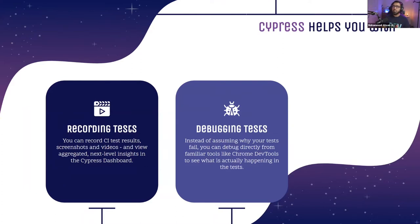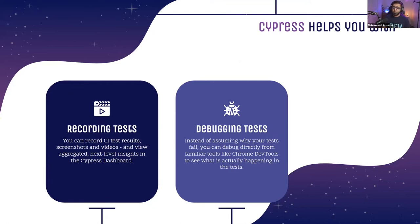Cypress also helps you run tests and visualize results. It supports recording tests, which is amazing for QA teams — you can pick a recording from a failed test and send it to the development team so they can see exactly what happened. It also provides snapshots and images you can share, and makes debugging very easy, letting you trace API calls and UI state step by step.